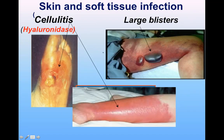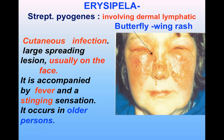Cellulitis is a skin and soft tissue infection caused by hyaluronidase, the spreading factor. Marked redness of the leg and large blister formation can be appreciated. Erysipelas is a cutaneous infection involving the dermal lymphatics mainly of the face, producing a characteristic butterfly wing rash. It is mainly seen in older people, presenting with fever, a stinging sensation of the face, and marked redness on the cheeks and bridge of the nose.